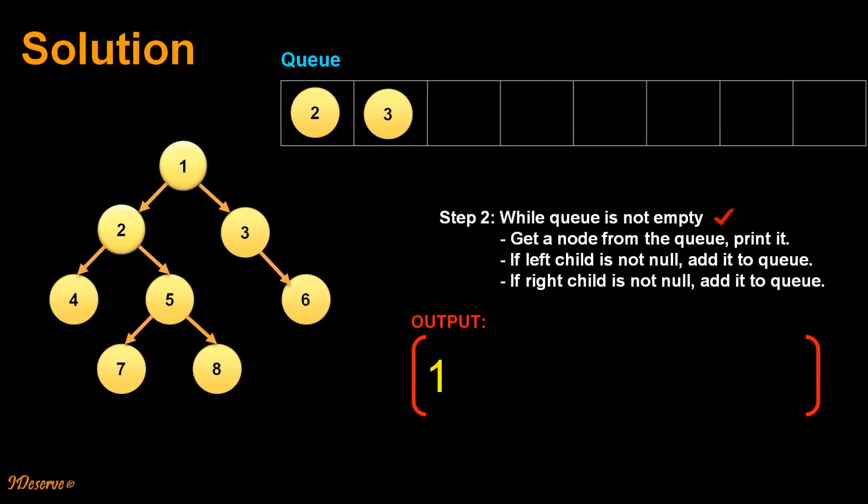We move on to second iteration of step 2 where again we check whether the queue is not empty. It is not empty and we delete a node from the queue and we print it. So that is why 2 gets printed. And we then added 4 and 5 which are left and right child of node 2.